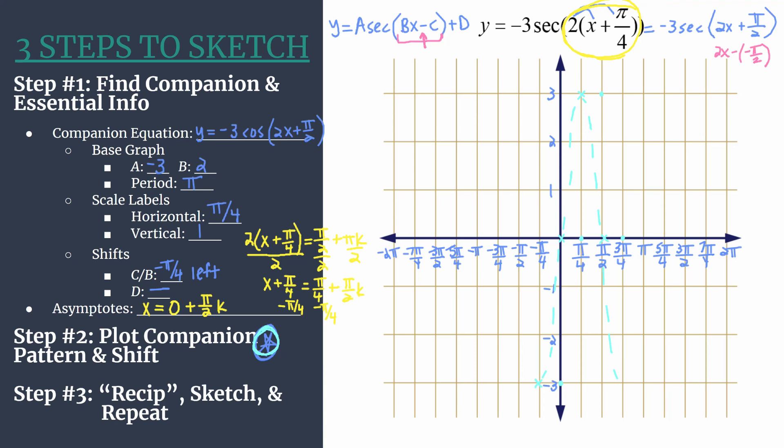But since we are graphing secant, we're ready for our final step, where we just basically transform this using this intermediate cosine or companion cosine function. So all you need to know is how these change. We'll start with our first point. So we're in step three, where we're creating the reciprocal graph.